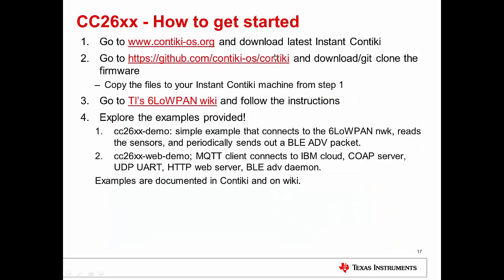To get started, first go to contiki-os.org and download the latest Instant Contiki, which is essentially a virtual machine for developing the entire Contiki 6LoWPAN stack. Once downloaded, go to github.com/contiki-os and git clone the firmware. You can git clone from the Instant Contiki VM or from any Linux machine and then copy the downloaded files into the Instant Contiki machine. Then go to the TI 6LoWPAN Wiki — the main page is at ti-6lowpan — and follow the instructions. We will go through the page in this video and I'll tell you where to find what.